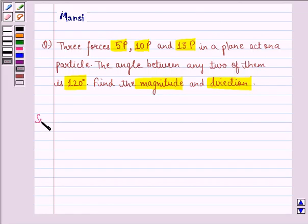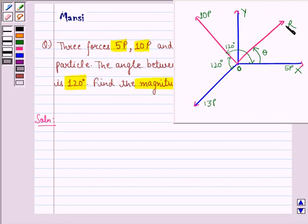Let us see the solution to this question. First, let R be the resultant of forces 5p, 10p and 13p acting at a point O, and let theta be the angle which R makes with the direction of 5p.